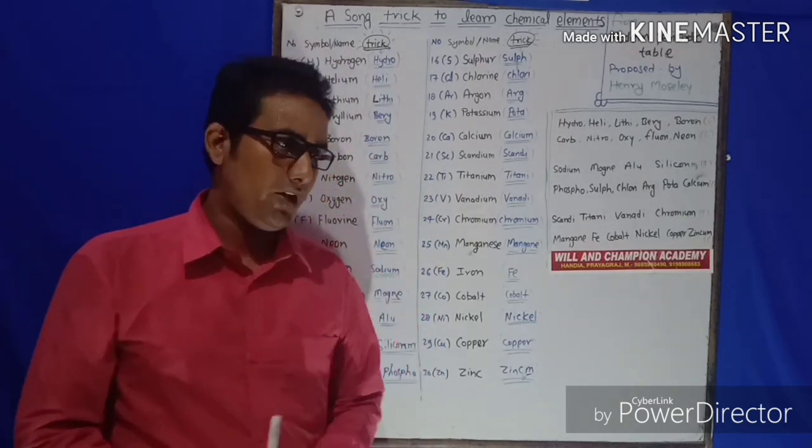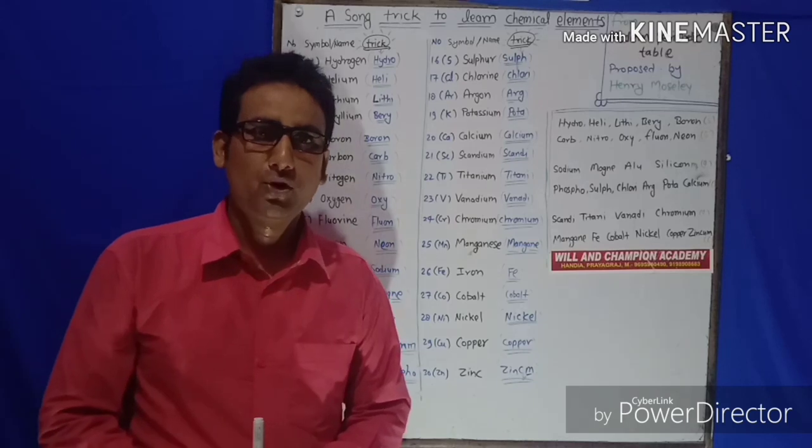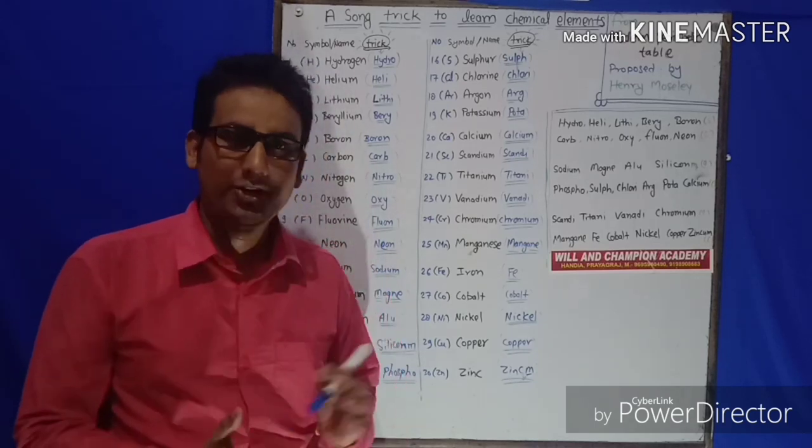Proposed by Sir Henry Moseley, there are 118 elements in this modern periodic table. I will try to cover 30 elements out of 118 elements.